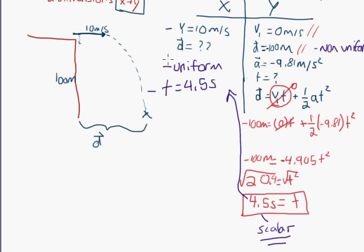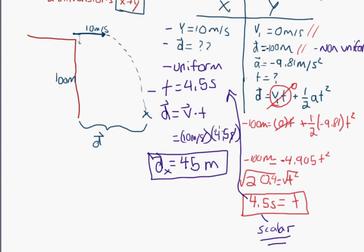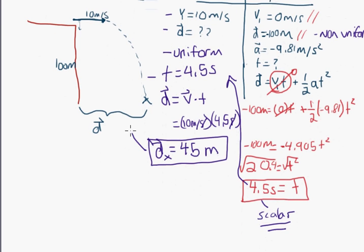Now that we have time, we know velocity and time in the x, so we can find displacement using distance equals velocity times time: 10 meters per second times 4.5 seconds equals 45 meters. That is the final answer — the object lands 45 meters from the base of the cliff.